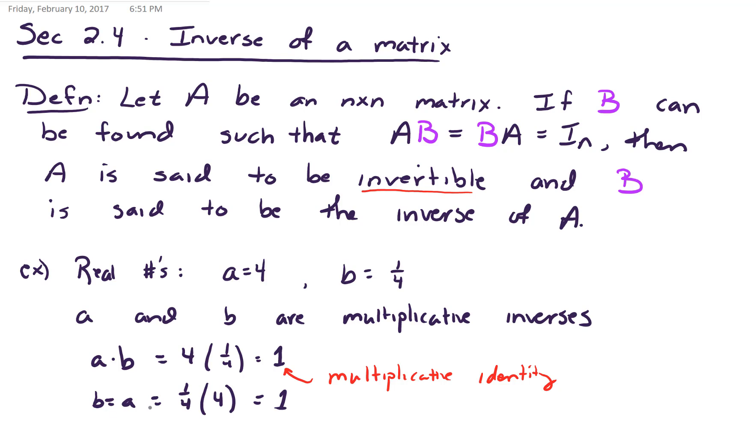So either way we do it, a times b or b times a, multiplying a and b together gives us the multiplicative identity. And so therefore a and b are called multiplicative inverses.